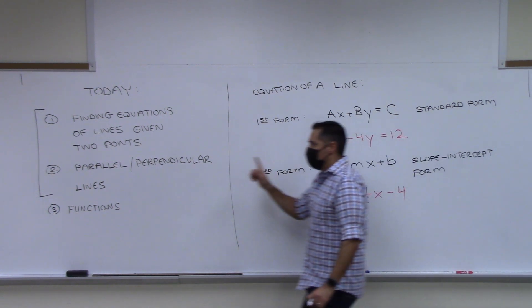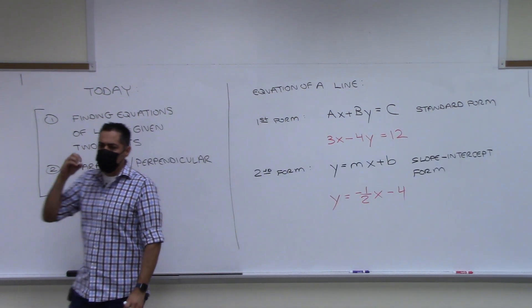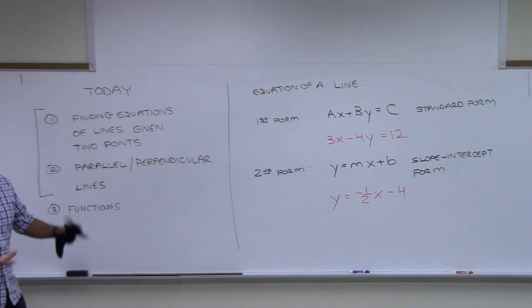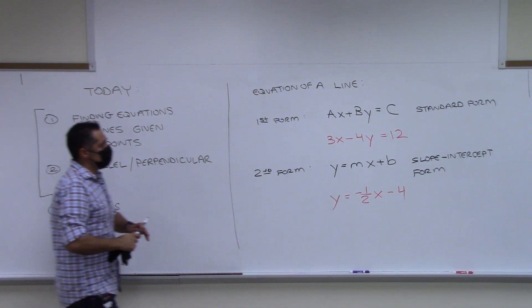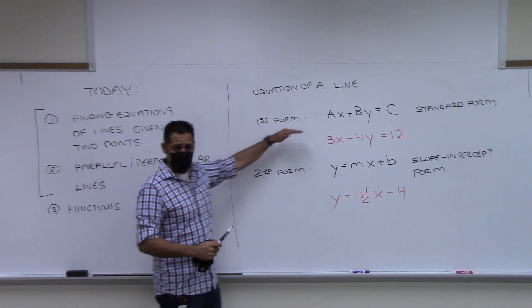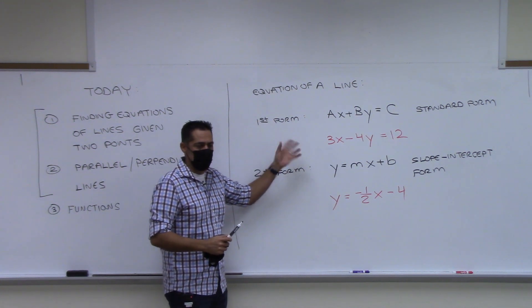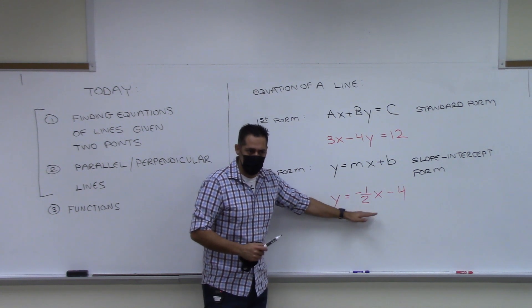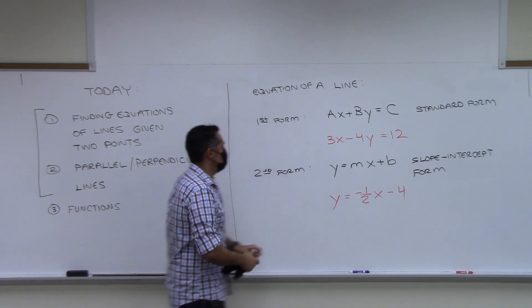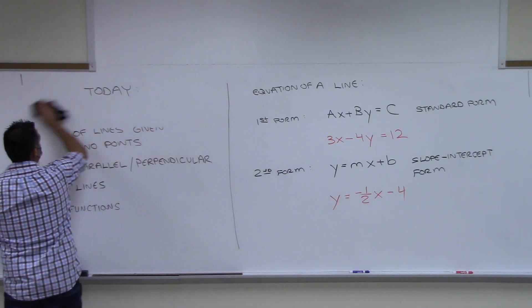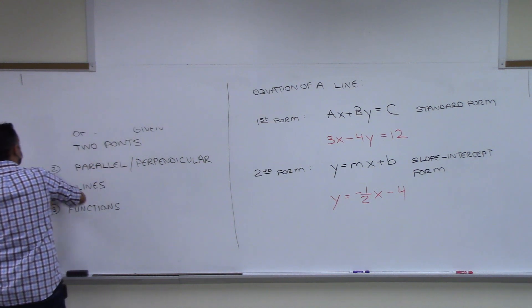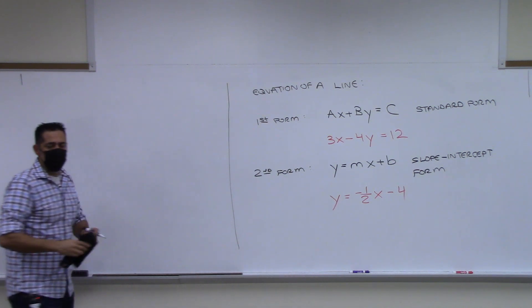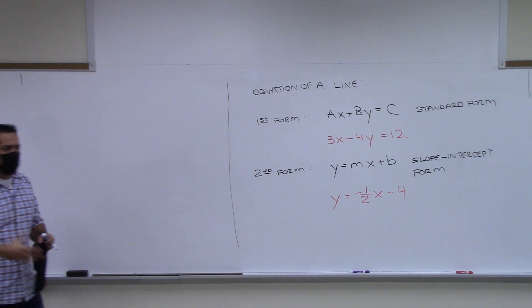Our goal here is: if I give you two points on a line, can you give me an equation of the line? The equation can be either one of these two forms — it doesn't matter which. Most of the time we'll go for slope-intercept form. So before we do it, let's make sure we understand a few definitions in terms of language when it comes to a line.